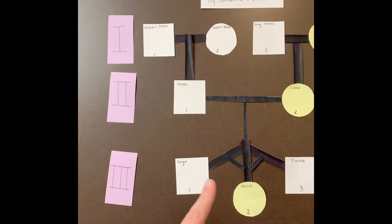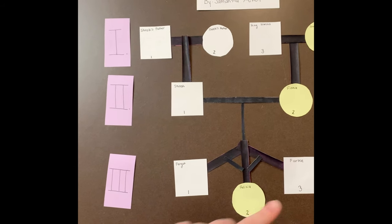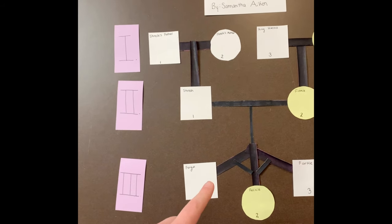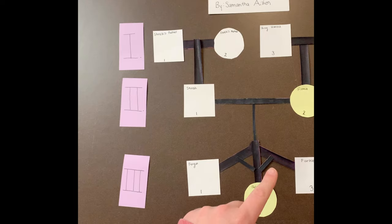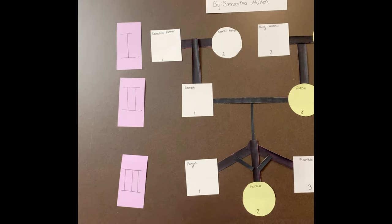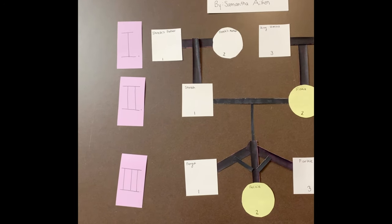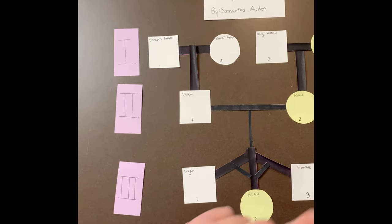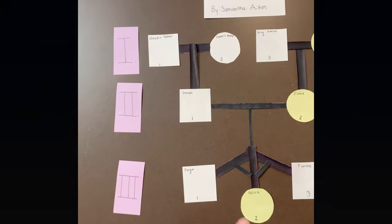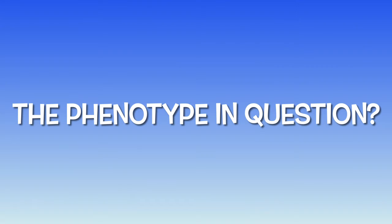As we move into generation three, you'll notice that Shrek and Fiona had three children — they were all fraternal triplets, as designated by these two bars right here. They had two sons, Fergus and Farple, and one daughter named Felicia.